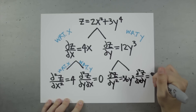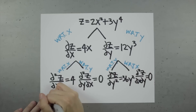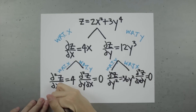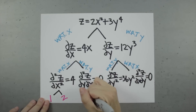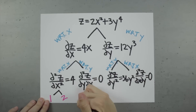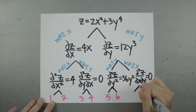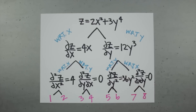As you can see, if we keep going taking higher order derivatives, we'd get 2 first order partial derivatives, 4 second order partial derivatives, and 8 third order partial derivatives, and so on.